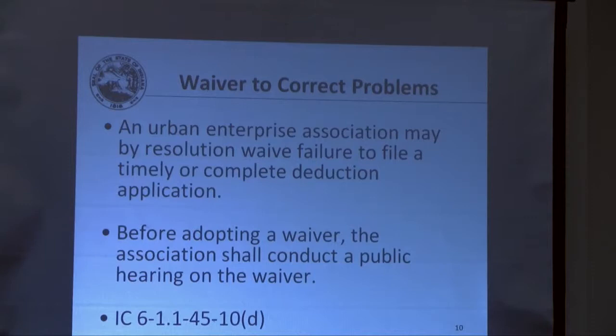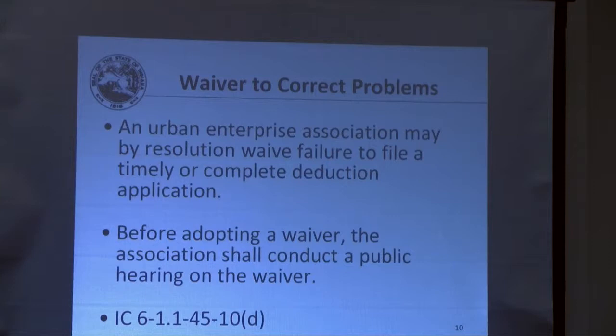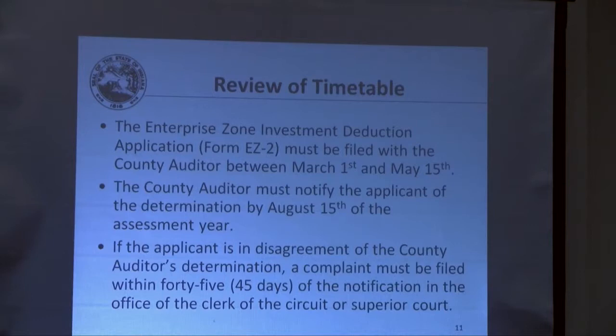For correcting certain types of problems, the association may by resolution waive failure to file a timely or complete deduction application. Quite often people forget to file the return — it's late and they're going to lose the deduction. This is the safety net built into the Indiana Code. The process is that the association places a legal advertisement in the paper, holds a public hearing, and then can adopt a waiver resolution granting forgiveness for that failure to file a timely or complete return.